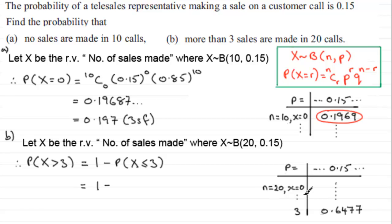And then you'd look down the X row here and you'll see 3, and then alongside the 3 you should find 0.6477. That gives us the probability that X is less than or equal to 3.